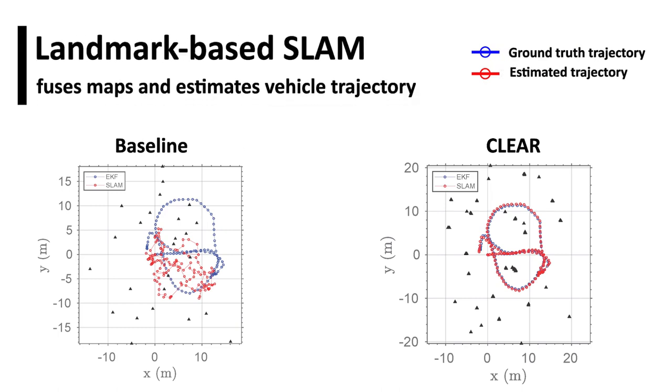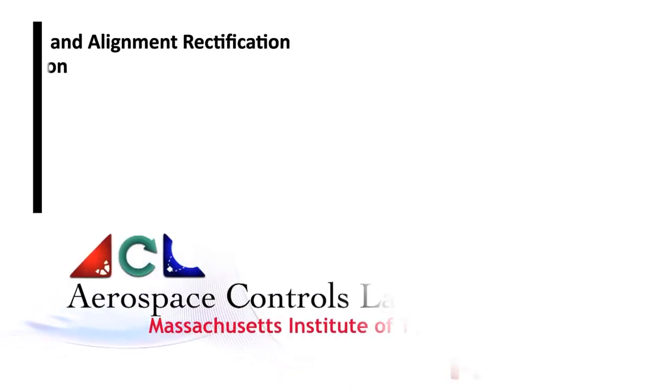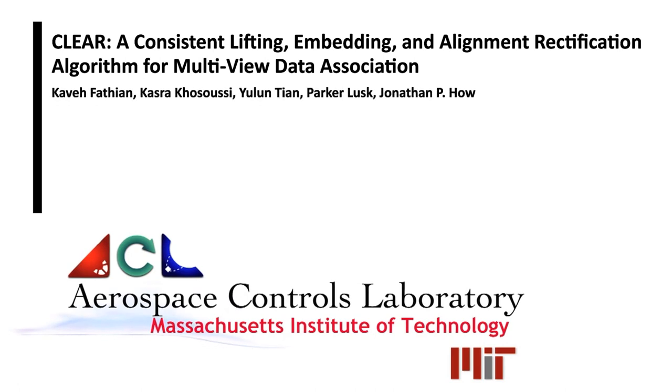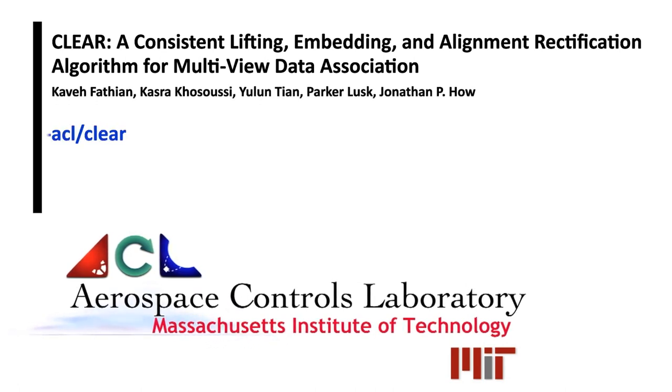The maximum likelihood estimate for fused maps and vehicle trajectory are then found by using CLEAR's output in a standard SLAM solver. We expect CLEAR to provide significant improvement in the accuracy and efficiency of existing discrete assignment problems, which traditionally use pairwise but potentially inconsistent correspondences.